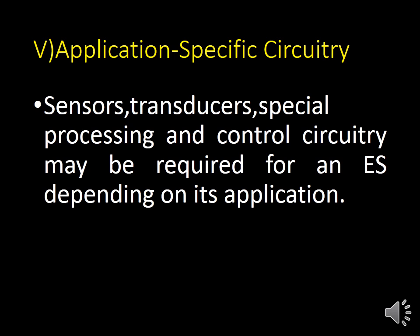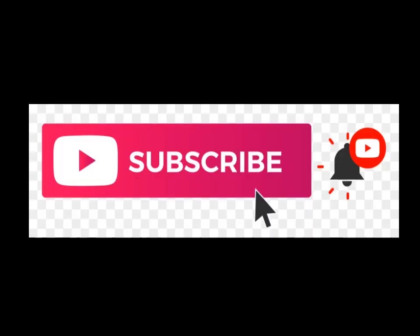The last component is application-specific circuitry. Application-specific circuitry means special circuits used for our particular application — sensors, transducers, and special processing and control circuitry may be required depending on the embedded system's application. Now we have come to the end of the session. I hope you all have understood. If you like this video, kindly subscribe and press the bell button so that you can get notifications regarding my future videos. Thank you.